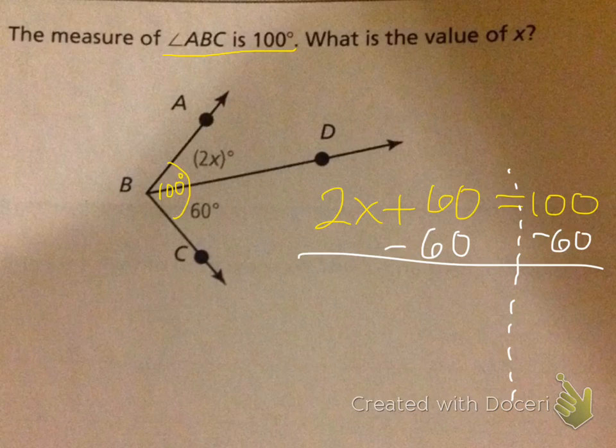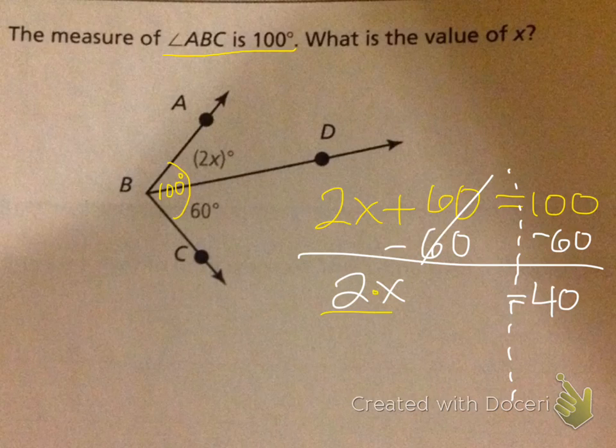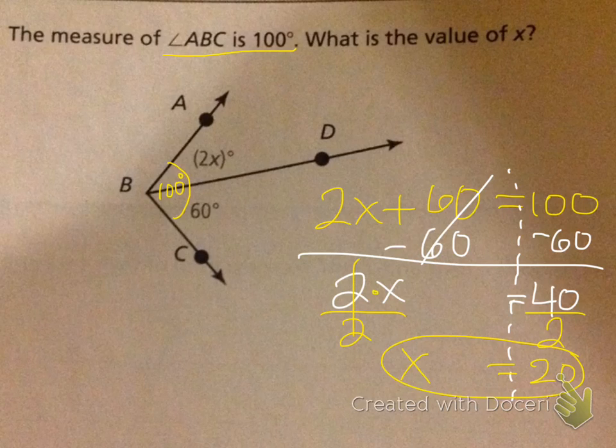And then comes the idea of balance. Whatever I do to one side, I must do to the other. So if I take away 60, that cancels there and I'm left with 40 here. And on the other side I have 2x, and the opposite of times is divide. Therefore, x must equal 20. So if I replace 20 right here, 2 times 20 is 40, 40 plus 60 is 100. We know we are right.